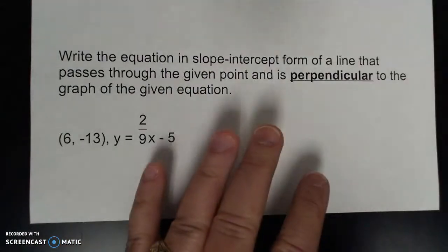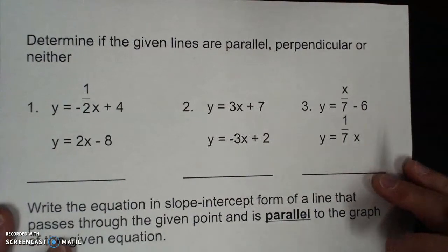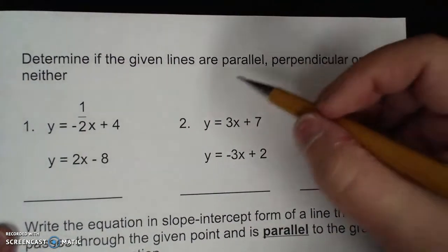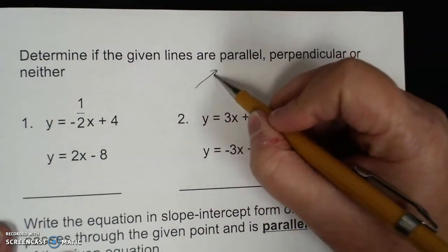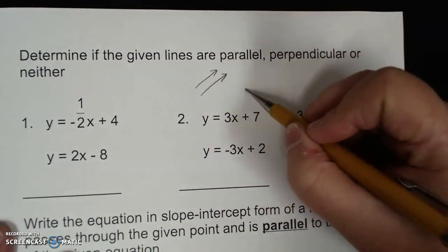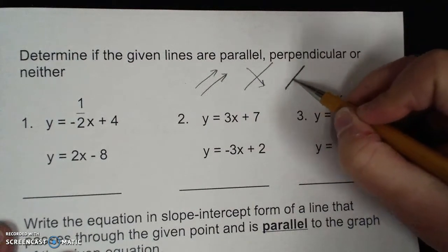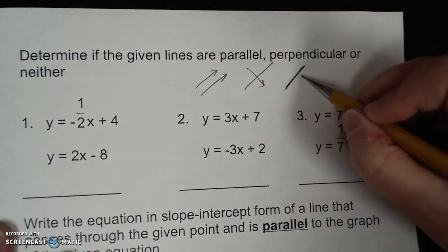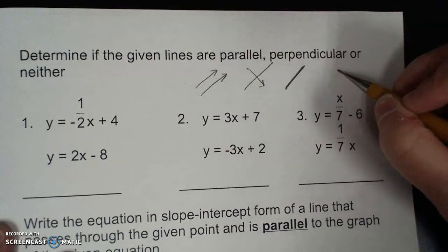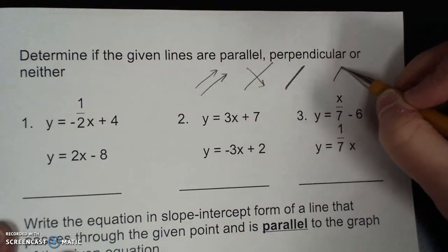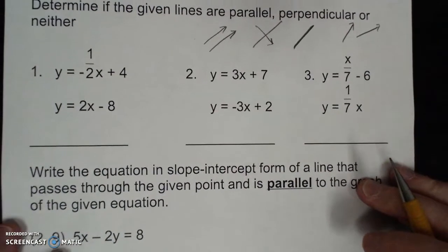Here you will be asked if lines are parallel, perpendicular, or neither. Understand that there are actually 4 things that can happen: they can be parallel, they can be perpendicular, they can be the same line — where one line is on top of the other in disguise — or they can be neither parallel nor perpendicular. It all depends on the slope.